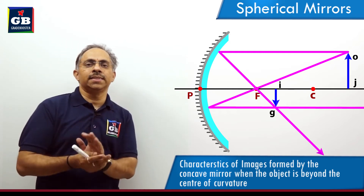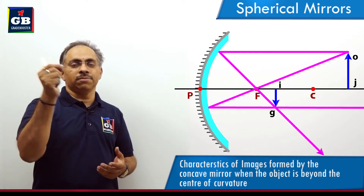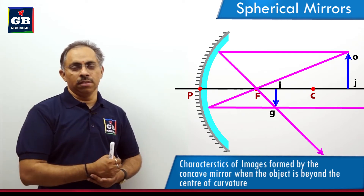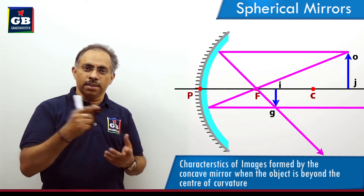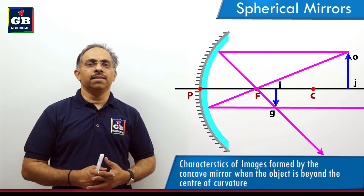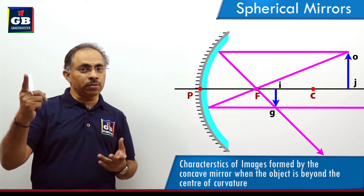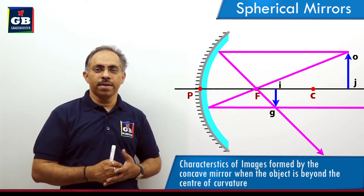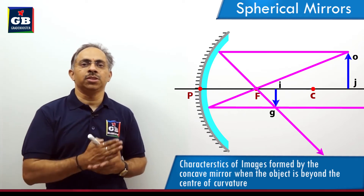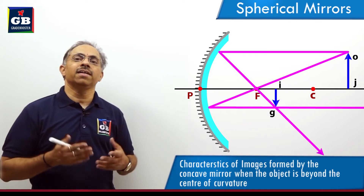The image of point O is formed at I. O is at the top and I is at the bottom, so the image is inverted. It is still diminished — lesser in size compared to the object. The image is inverted, real, and diminished. Real means that if we place a screen at the position where the image is formed, we will be able to observe the image on the screen.